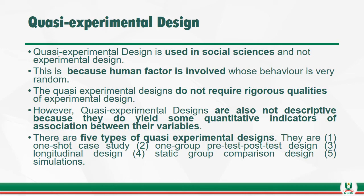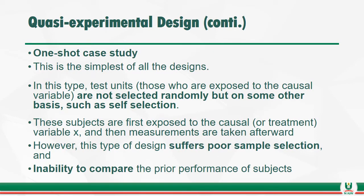However, quasi-experimental designs are also not purely descriptive because they do yield some quantitative indicators of association between variables. There are five types of quasi-experimental designs: one-shot case study, one-group pre-test post-test design, longitudinal design, static group comparison design, and others. The one-shot case study is the simplest of all the designs. In this type, test units are not selected randomly but on some other basis such as self-selection. Subjects are first exposed to the causal treatment of variable X and then measurements are taken afterwards. However, this design suffers from post-sample selection bias and there is an inability to compare prior performance.